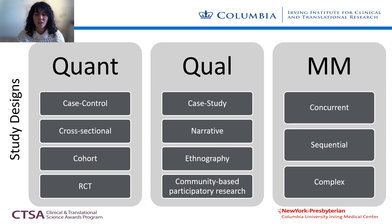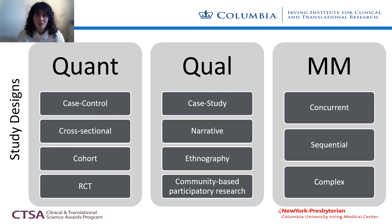Quantitative and qualitative methods also have their own study designs. Most public health scientists are probably familiar with quantitative designs such as case-control, cross-sectional, cohort, or randomized controlled trials. Qualitative study designs include case studies; narratives, which weave together a sequence of events to form a cohesive story from in-depth interviews and documents to illustrate larger life influences that created the phenomenon under study; and ethnography — the quintessential idea of an anthropologist in the field, though ethnography can occur in all different settings, including clinical ones.